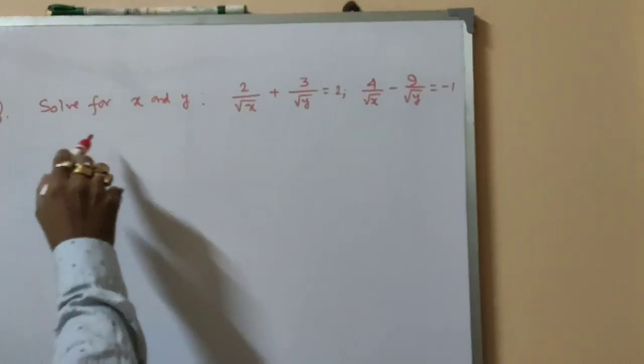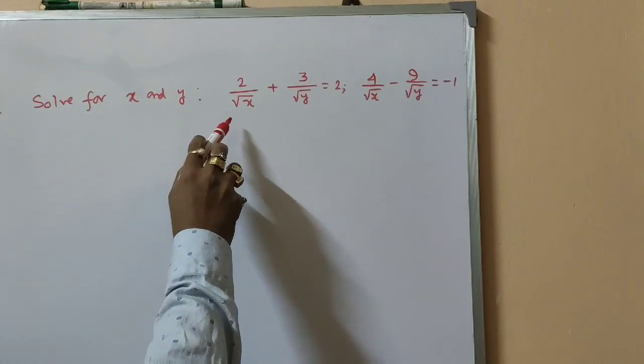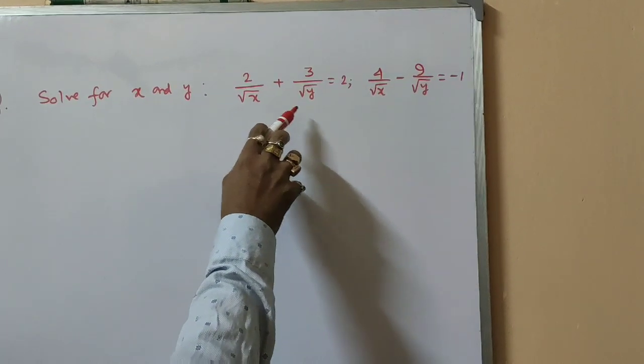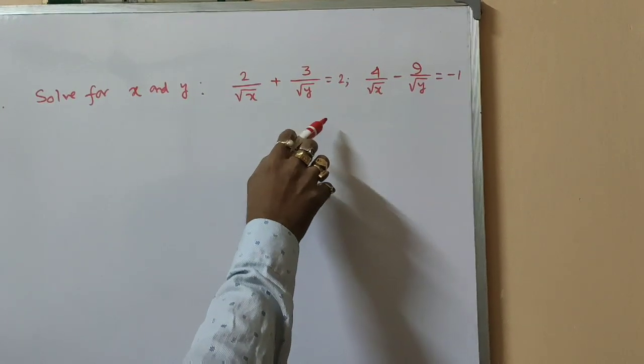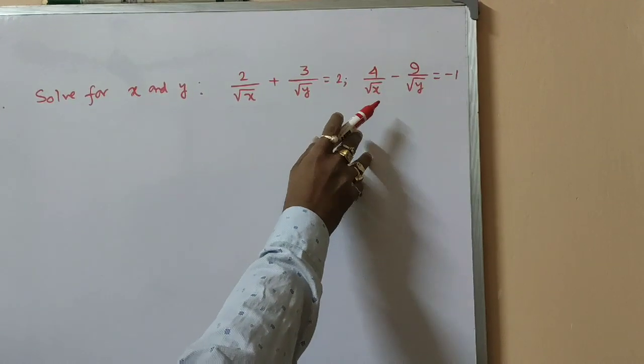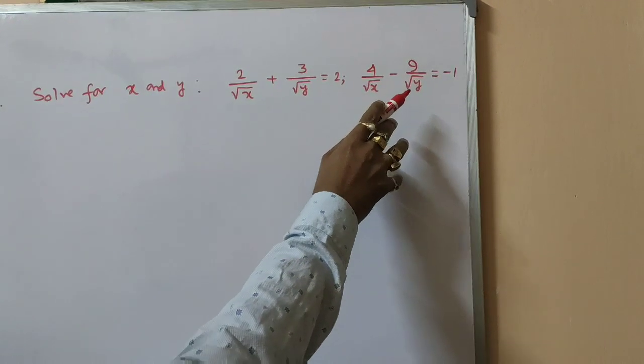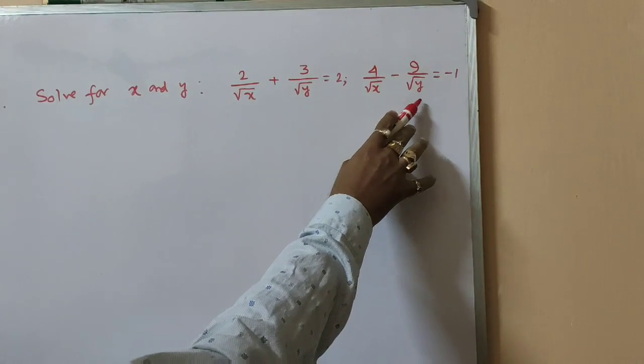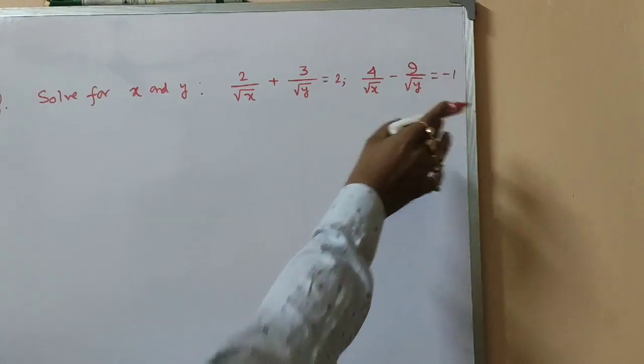Solve for x and y: 2 by root of x plus 3 by root of y equal to 2, and 4 by root of x minus 9 by root of y equal to minus 1.